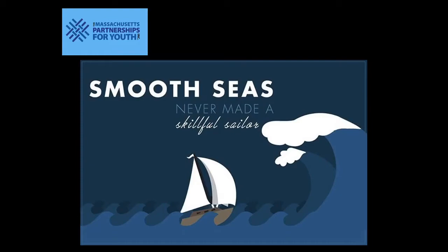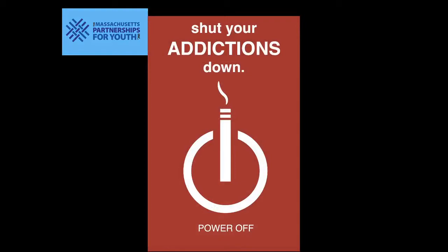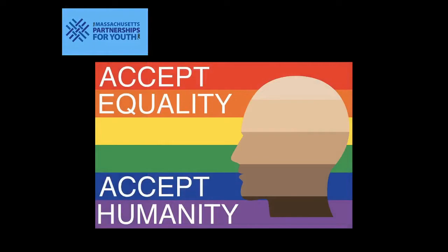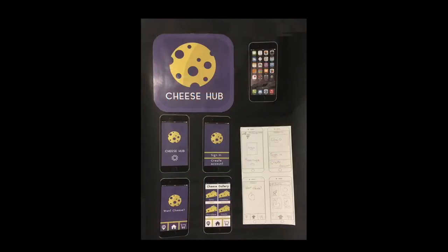Every year, students participate in a poster contest sponsored by the Massachusetts Partnership for Youth, known as the MPY. These posters are required to communicate a specific theme as designated by the MPY, but other requirements such as typography and layout are required by me. This slide shows a winner for one year, another winner for another year with a different theme, and an honorable mention winner with another theme as well.